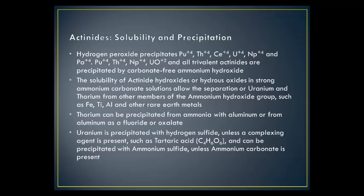Hydrogen peroxide precipitates Pu⁴⁺, Th⁴⁺, Ce⁴⁺, U⁴⁺, Np⁴⁺, and Pa⁴⁺. Pu⁴⁺, Th⁴⁺, Np⁴⁺, U⁴⁺, and all trivalent actinides are precipitated by carbonate-free ammonium hydroxide. The solubility of actinide hydroxides or hydrous oxides in strong ammonium carbonate solutions allows the separation of uranium and thorium from other members of the ammonium hydroxide group such as Fe, Ti, Al, and other rare earth metals. Thorium can be precipitated from ammonia as a fluoride or oxalate. Uranium is precipitated with hydrogen sulfide unless a complexing agent such as tartaric acid (C₄H₆O₆) is present, and can be precipitated with ammonium sulfide unless ammonium carbonate is present.